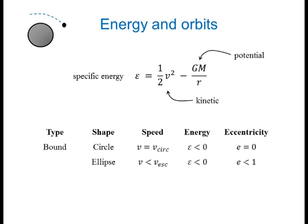That's because zero is enough energy for your potential energy to be zero — enough energy to be found at a very great distance from the planet. The eccentricity of a circular orbit is zero, and the eccentricity of an elliptical orbit is something between zero and one.